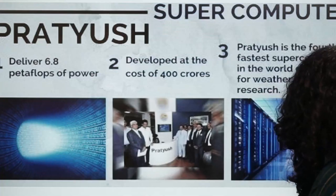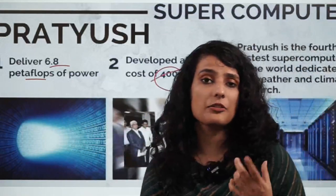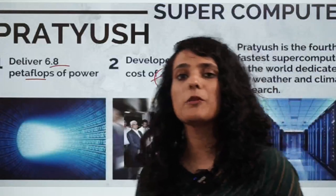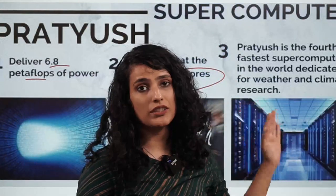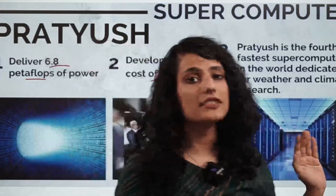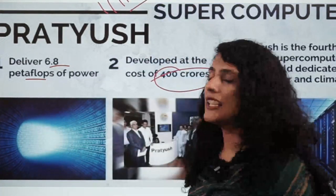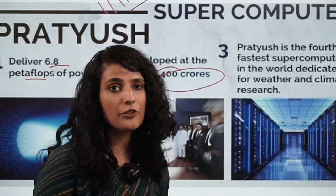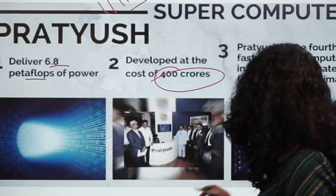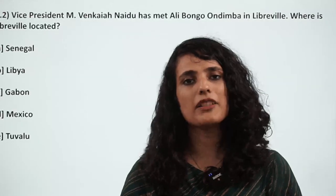Pratyush supercomputer, with 6.8 petaflop power, has been developed at a cost of just rupees 400 crore. It is the 4th fastest supercomputer in the world dedicated to weather and climate research, and was developed by IITM Pune. Mihir supercomputer is also related to weather forecasting and climate research. Try to research more about it — being curious and searching on your own helps you learn and understand better.